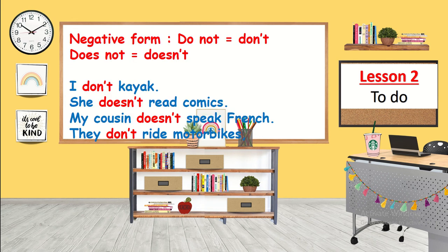For the negative form, we use 'don't' and 'doesn't'. For example: I don't kayak. She doesn't read comics. My cousin doesn't speak French. They don't ride motorbikes. Note that after 'don't' and 'doesn't', we use the base form of the verb — we cannot add any suffix to the verb.